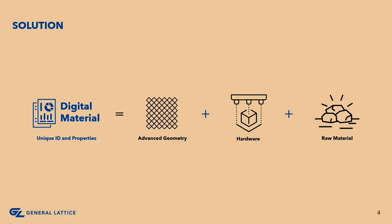Imagine being an engineer just getting into additive, exploring some latticing tools. You have an array of different unit cells, you can manipulate their fields, you can do all these different things — where do I start? The goal is to remove a lot of the hurdles involved. Don't worry about whether it's a gyroid or a Schwartz, don't worry about the wall thickness. All you really need to think about is: can I get these mechanical properties into my design space?